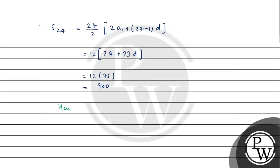Toh yahan se likh sakte hain: Hence, 900 is the required sum. So 900 will be the final answer. I hope you understood it well. Best of luck.